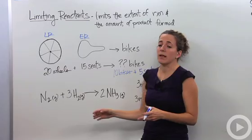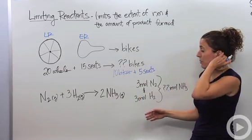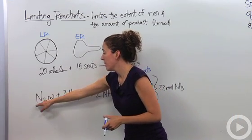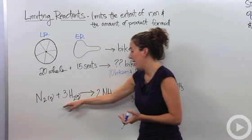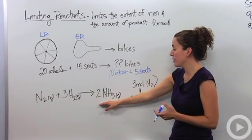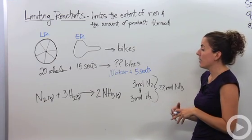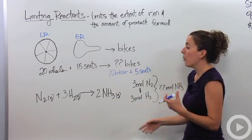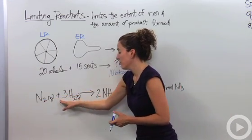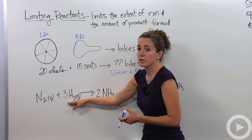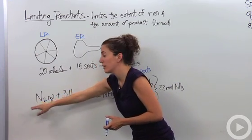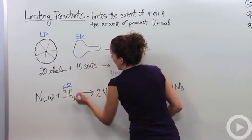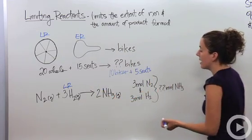Let's break this down into something chemistry based. Let's say you worked in a plant making ammonia. We know the reaction is N₂ + 3H₂ → 2NH₃. If you're given three moles each of nitrogen gas and hydrogen gas, how much ammonia can you produce? Looking at the mole ratios — one to three — you'll use all three moles of hydrogen with one mole of nitrogen. So hydrogen is the limiting reactant, and you're only able to make two moles of ammonia.